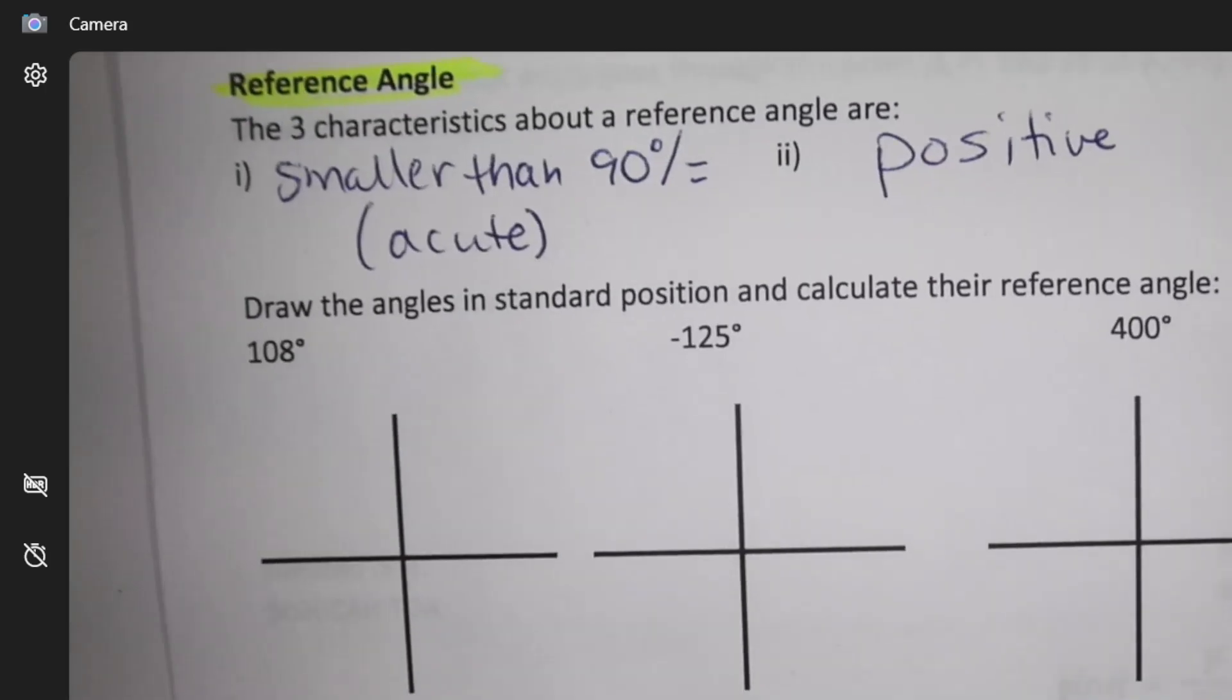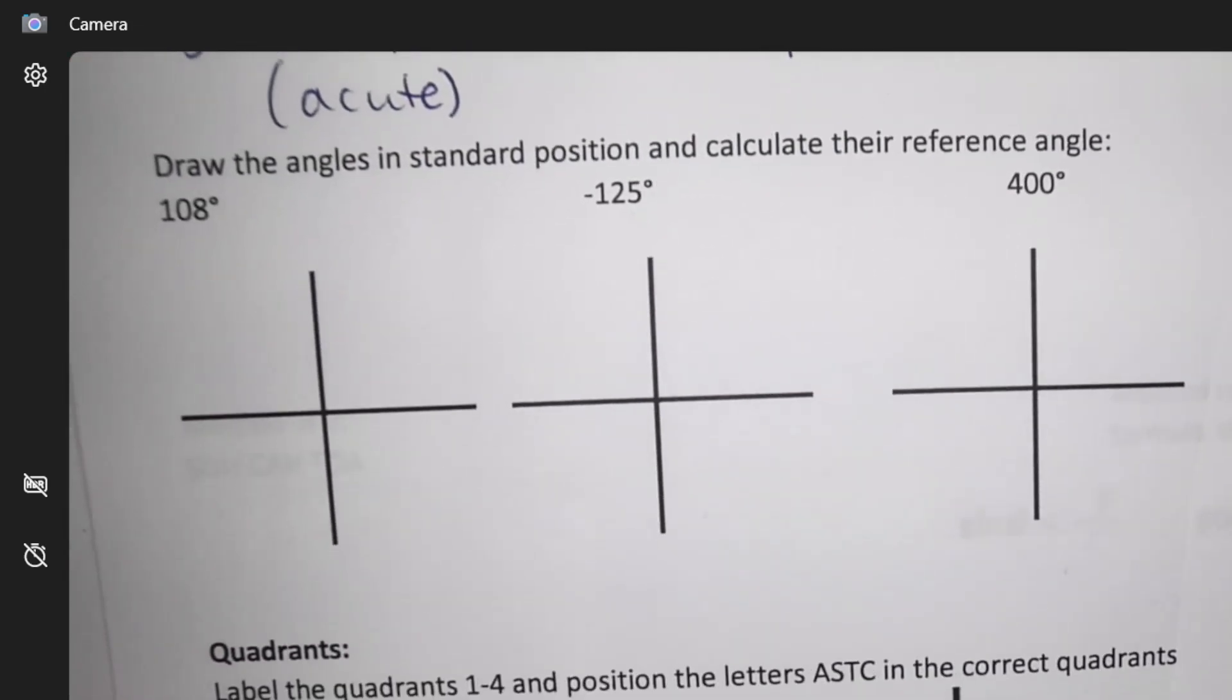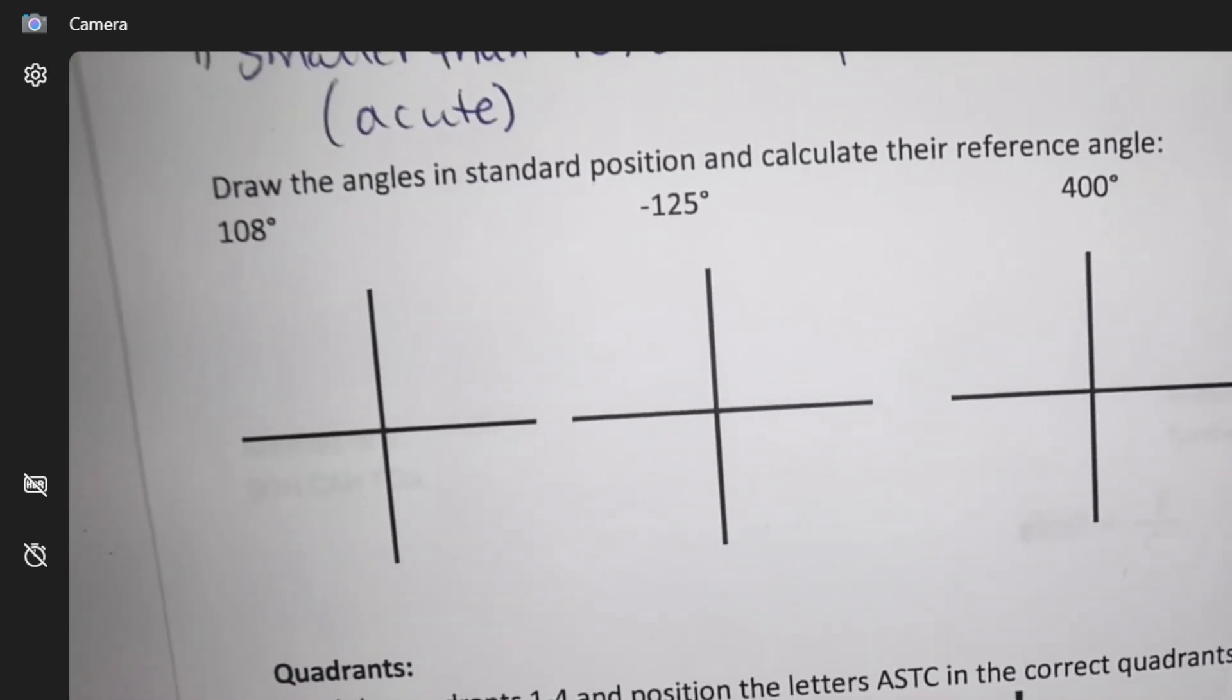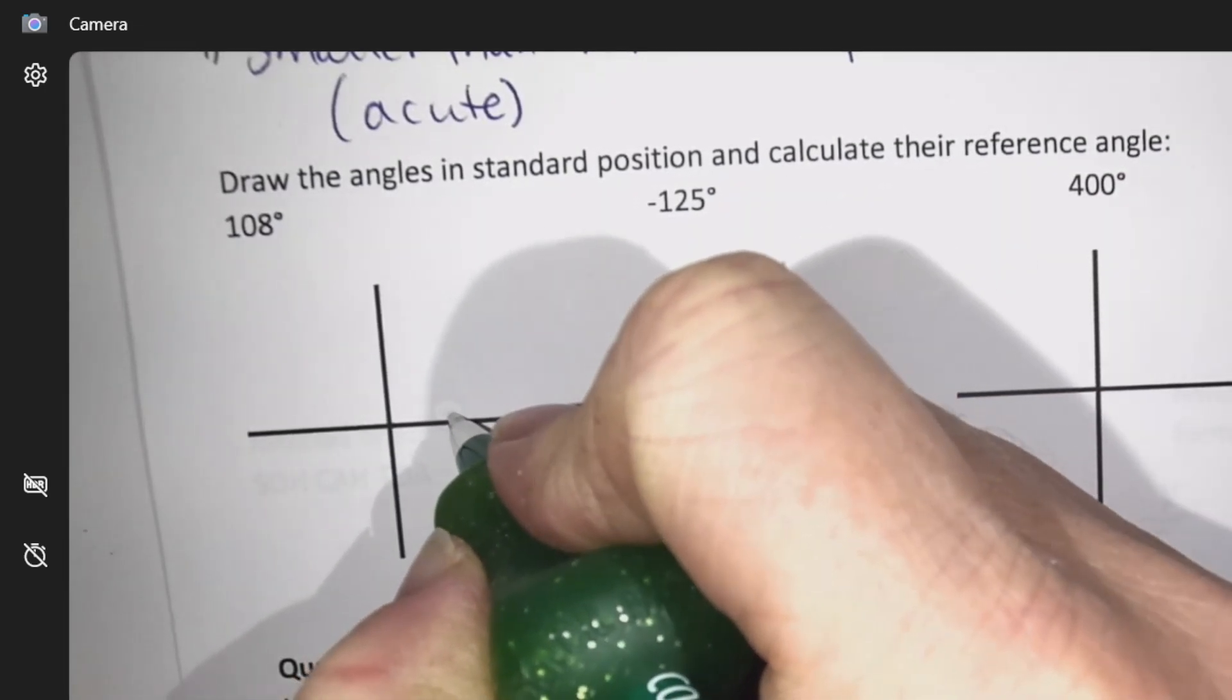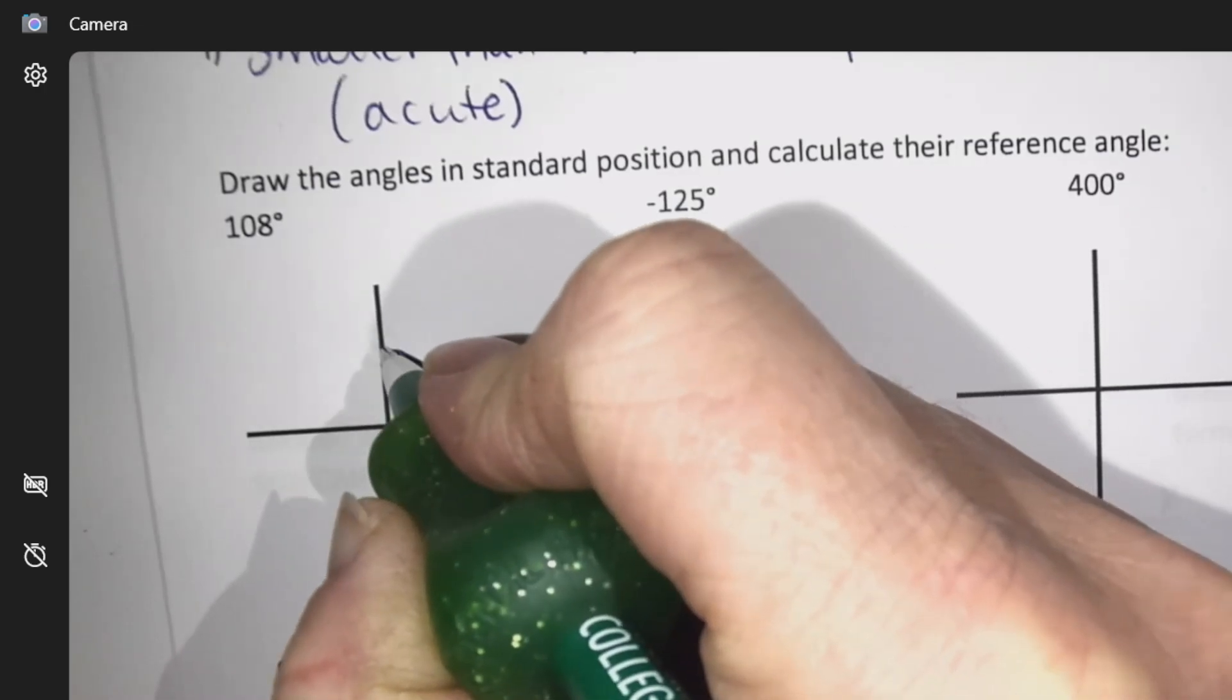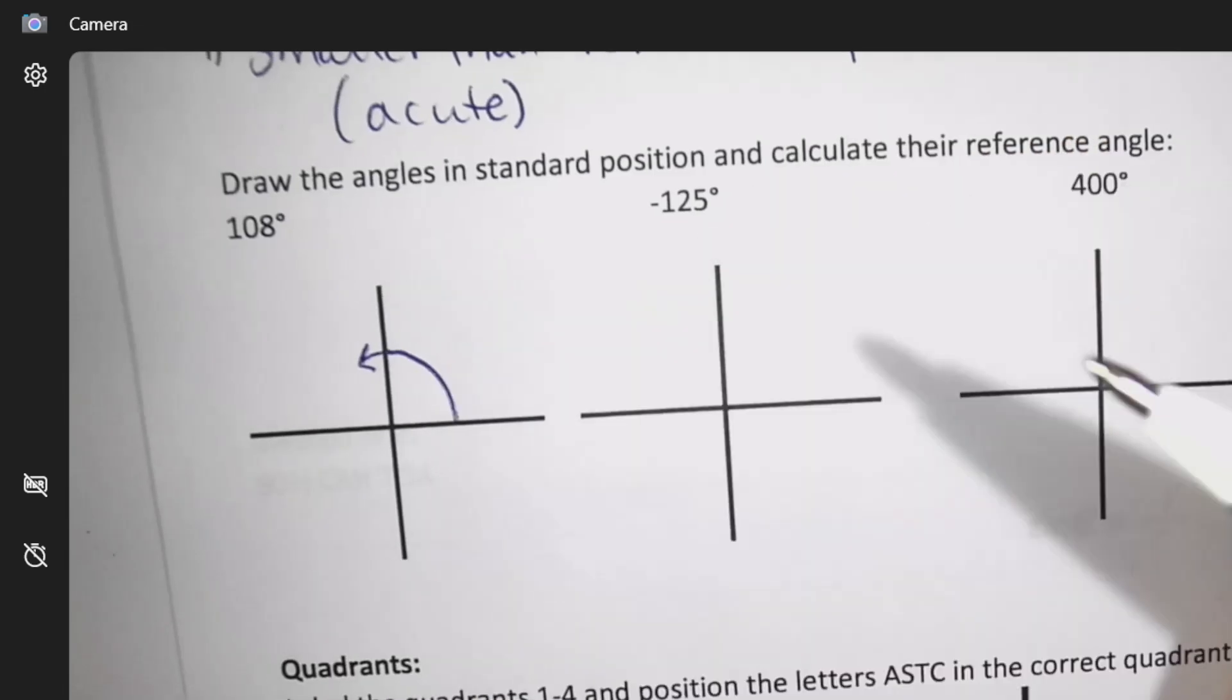Can you figure out how to draw these angles? Drawing an angle. 108 degrees. If I start on this line, I've got to travel. This is 90, and then a little bit past.